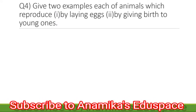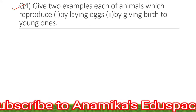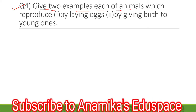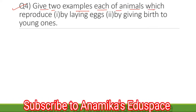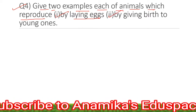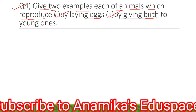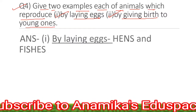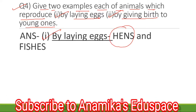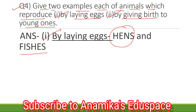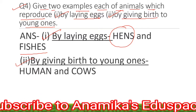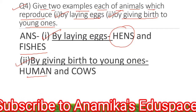Now coming to question number 4: Give two examples each of animals which reproduce by laying eggs and by giving birth to young ones. The answer goes as: by laying eggs — hens and fishes. By giving birth to young ones — humans and cows.